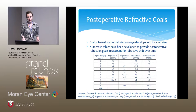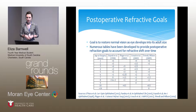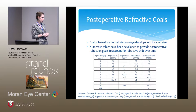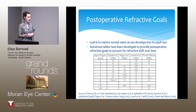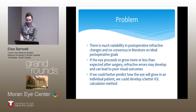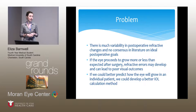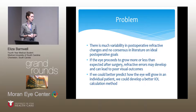When implanting an IOL in children, the goal is to restore normal vision as the eye develops into its adult size. Most pediatric ophthalmologists account for the refractive shift over time by leaving the child hyperopic right after surgery. There have been many tables developed to guide surgeons in postoperative refractive goals, but they're not all the same — there's not a lot of consensus in the literature on ideal post-op goals and there's a lot of variability in post-op refraction in kids. If the eye grows more or less than expected, refractive errors can develop and lead to poor visual outcomes. So if we could better predict how the eye will grow in an individual patient, we could potentially develop a better IOL calculation method.